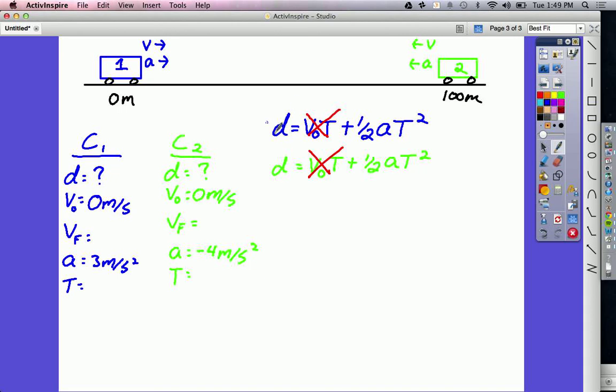So, now I know the displacement of car 1 equals one-half at squared. I know the displacement of car 2 equals one-half at squared for its acceleration. But we're not actually done yet.